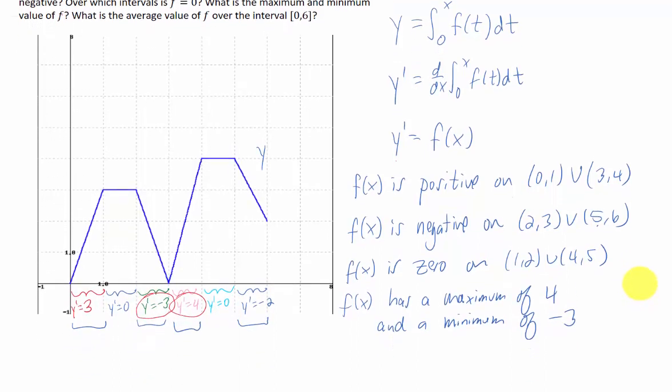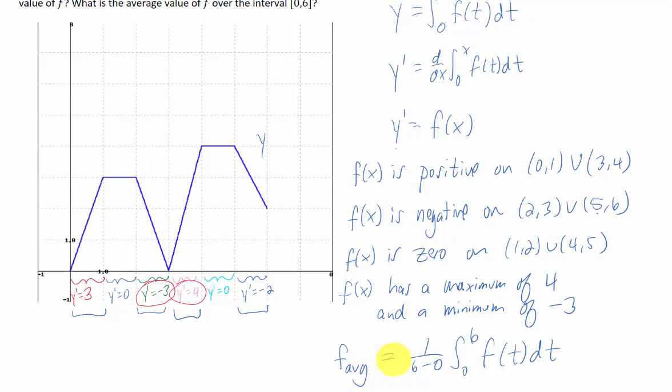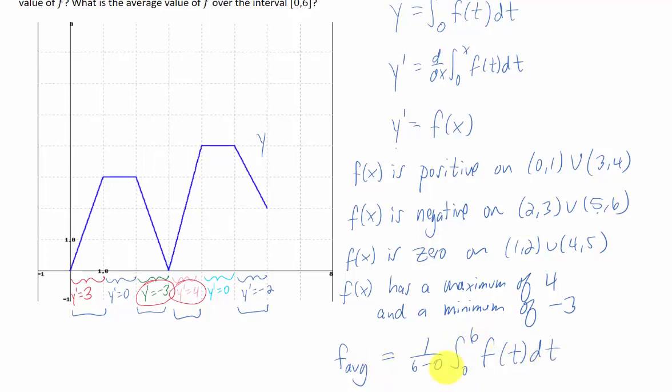Now, the average value of a function over the interval 0 to 6 is an interesting question. Recall that the average value of a function is given by 1 over the length of the interval, that would be 6 minus 0 in this case, times the integral from the lower end of the interval to the upper end of the interval of the function. So this is the formula that we need to use to find the average value of our function from the interval 0 to 6.